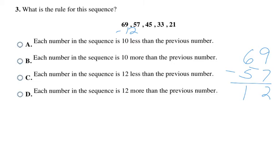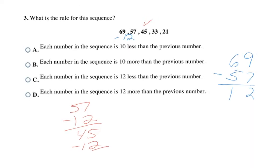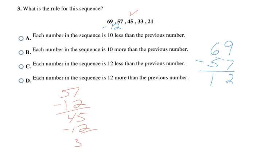Then I want to check that that pattern holds true for the rest of the numbers in the list. I'm going to do 57 minus 12 is 45, so that checks out. 45 minus 12 is 33, so that checks out. And then 33 minus 12 is 21, so that checks out. So minus 12 is definitely my pattern. That says here that each number in the sequence is 12 less than the previous number. That's choice C.